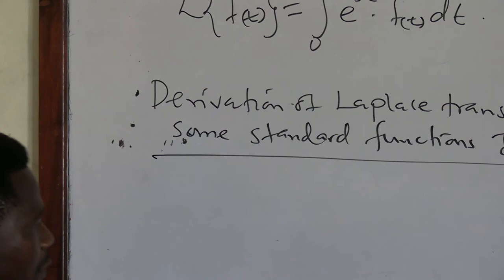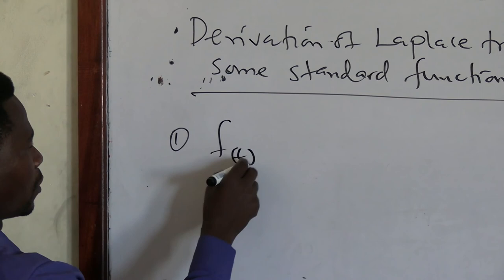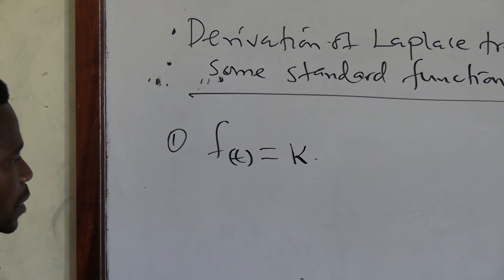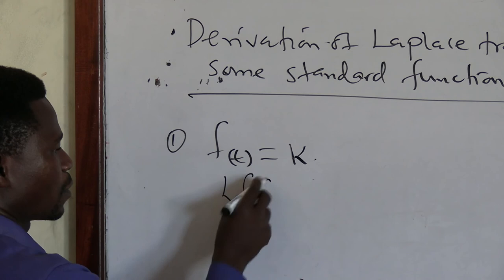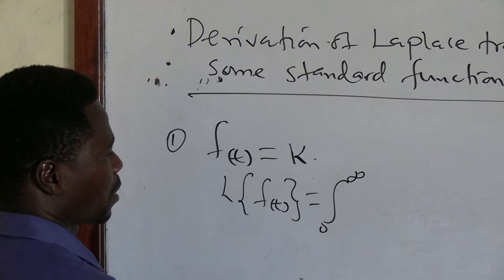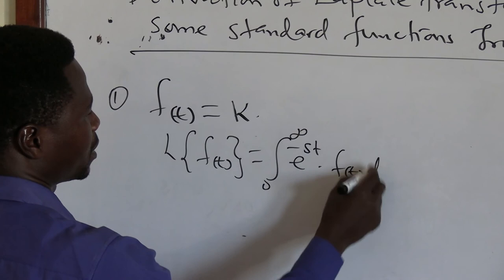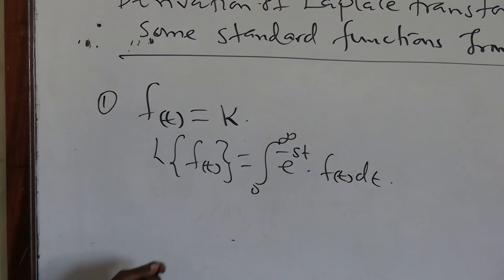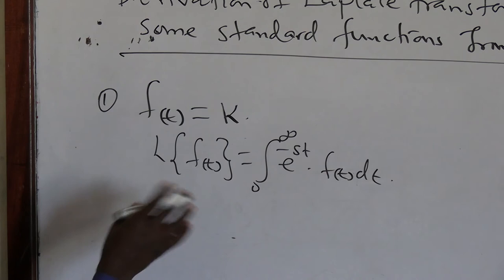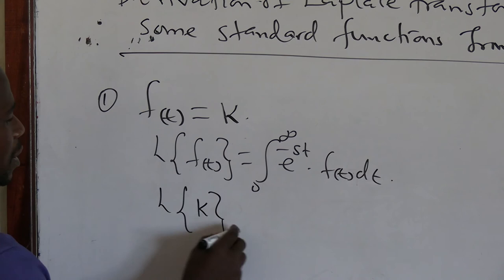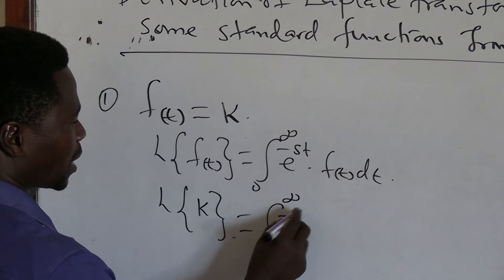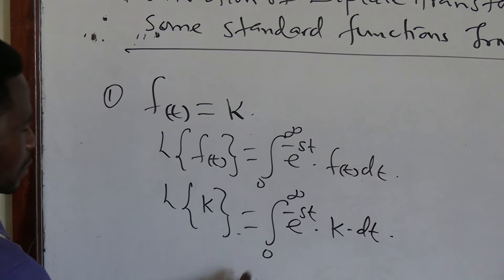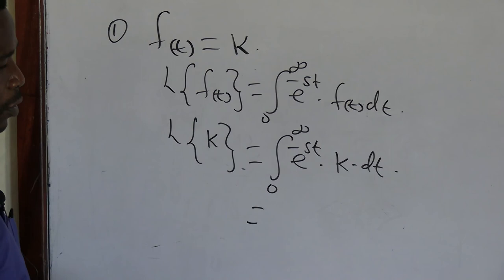The first function I want us to look at, number one, is a function of t equals to a constant k. From the definition, the Laplace transform of f of t is equals to integral from 0 to infinity of exponential e power negative st times f of t dt. Since the function of t is a constant, the Laplace transform of k becomes the integral from 0 to infinity of exponential e power negative st times k dt. The constant k can be taken outside the integral.